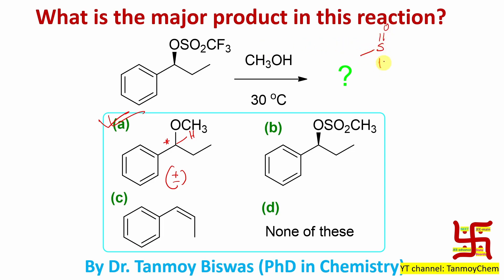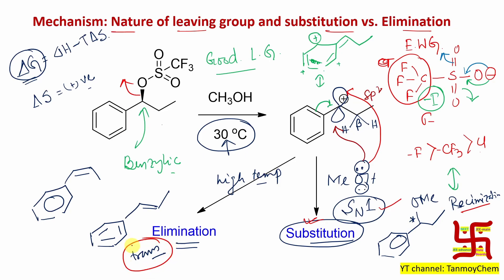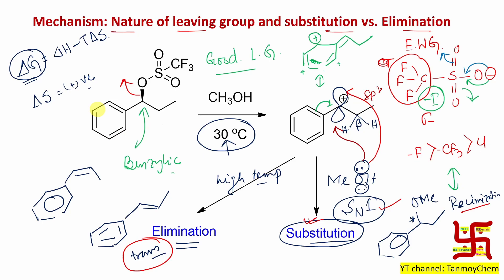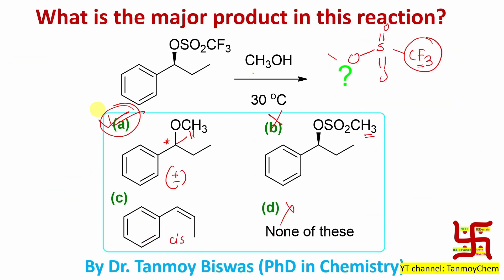Now, how can you solve this in under 30 seconds in an exam? The leaving group is trifluoromethane sulfonate (–OSO2CF3). CF3 is a strong electron-withdrawing group, but the sulfur–carbon bond is covalent and significantly stronger — so the three fluorines cannot be substituted by the methyl group. That option is invalid. The elimination product option shows a cis double bond, but as explained, trans is preferentially produced — so that option is also wrong. 'None of the above' is gone because either elimination or substitution does occur. The remaining answer is option A — the racemization product.